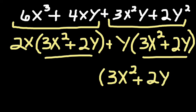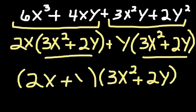And then the part that's left, the 2x plus y, will be my other factor. And we have factored by grouping a polynomial with four terms.